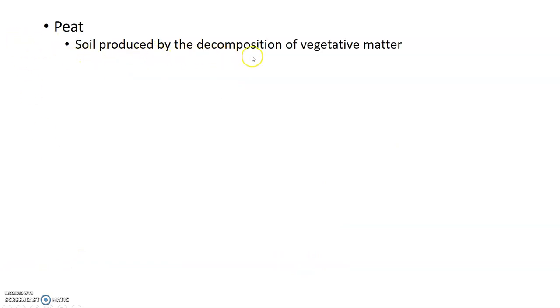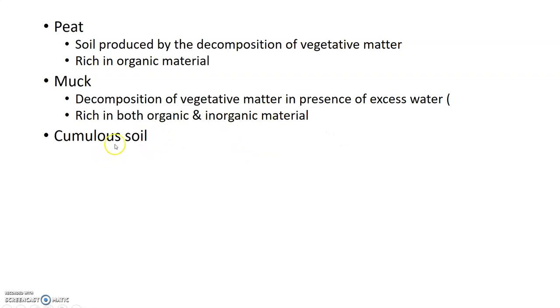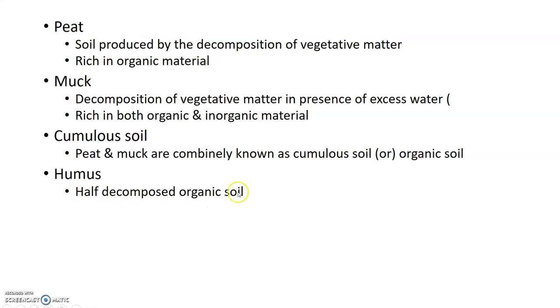Peat is soil produced by decomposed vegetative matter. Muck is organic matter with excess water. Cumulosol is a combination of peat and muck.